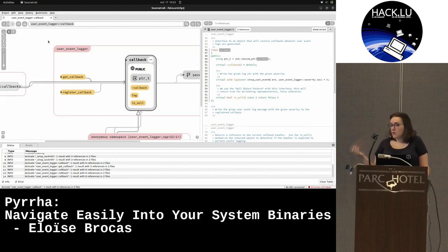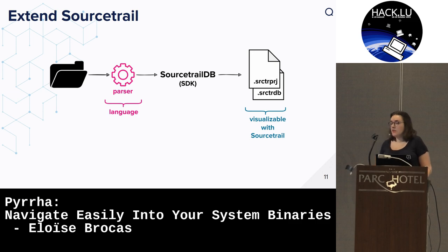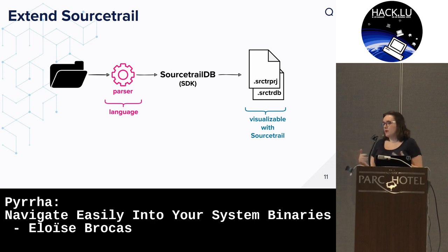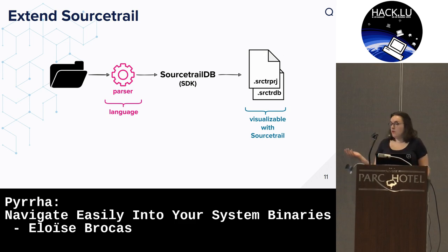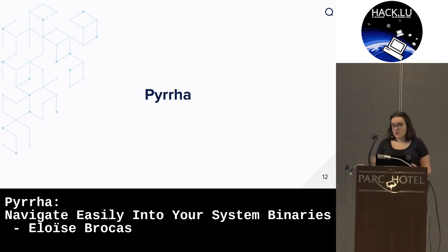We already use SourceTrail when we have a white box analysis with source code. The question was: could we use it as the graphical interface of our project? The answer is yes, because SourceTrail also provides an SDK. You create your own parser to parse what you want, then transform the data into something representable by SourceTrail - classes, functions, variables, and so on. You create a database and a project file with the SDK, and you can open it with SourceTrail and navigate as shown. So we decided to go with SourceTrail and create our own parser called Pyra.